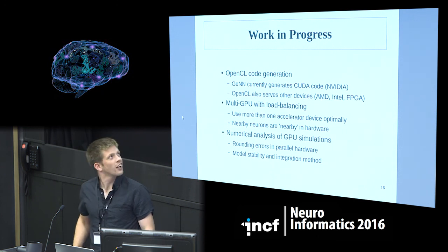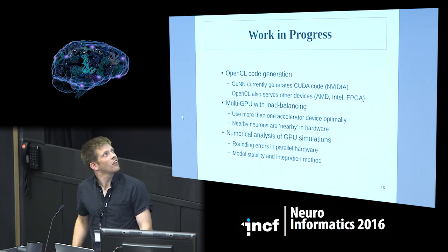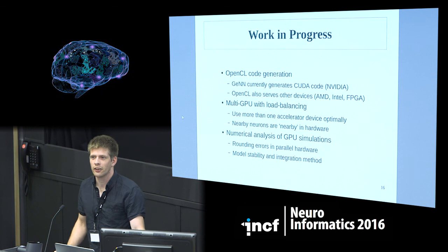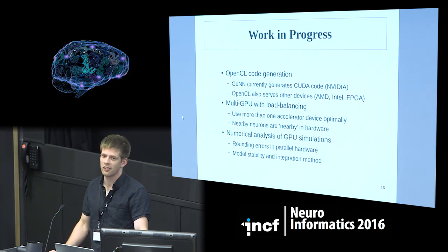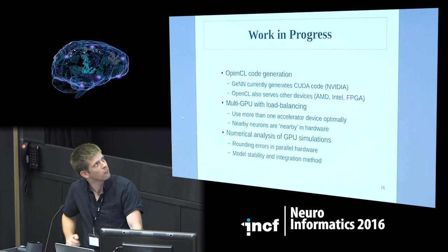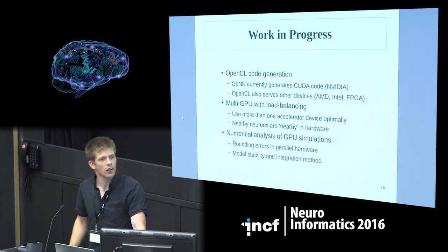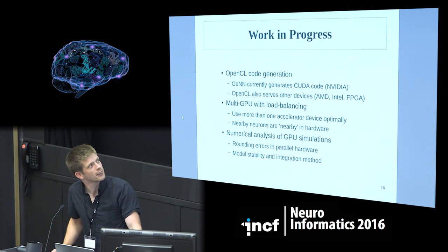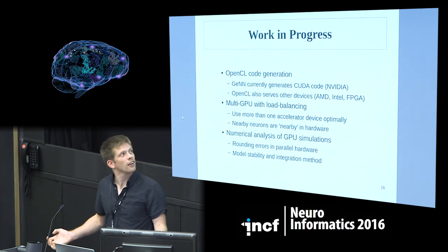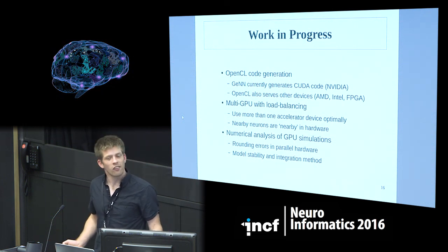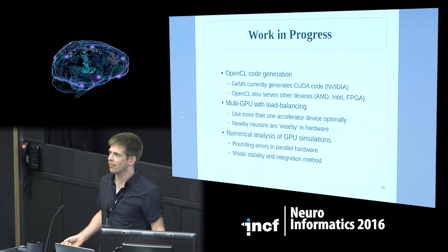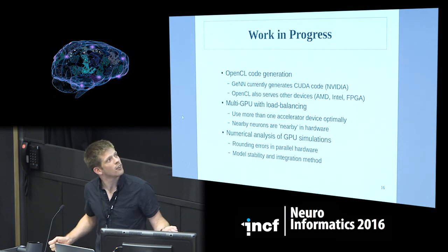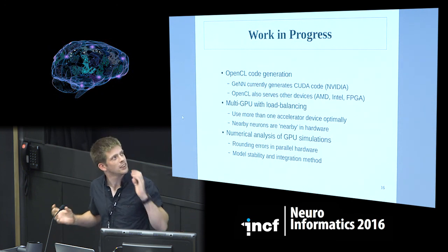Some work in progress: we will soon have an OpenCL implementation. Right now GeNN only has a CUDA implementation, so we're limited to NVIDIA GPUs. With an OpenCL implementation we'll be able to use AMD devices, Intel devices such as the Xeon Phi chip, and even FPGAs.